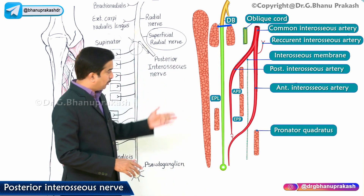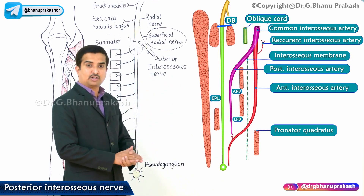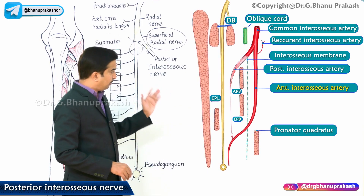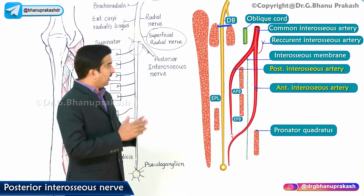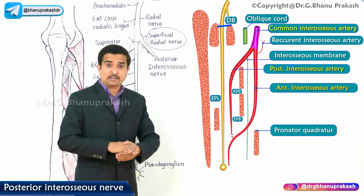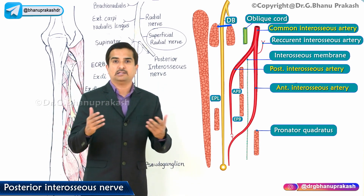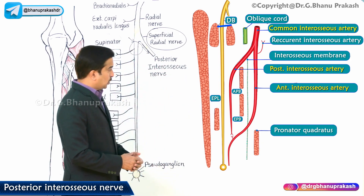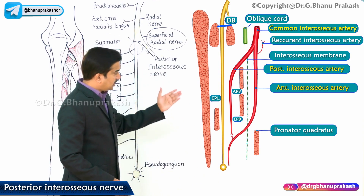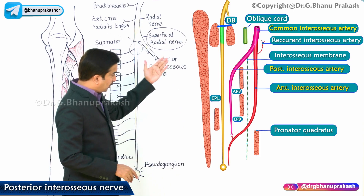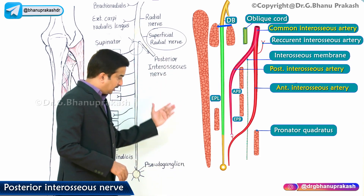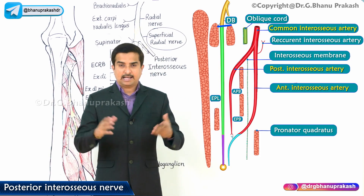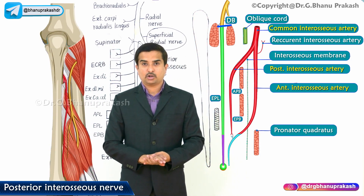If you see the posterior interosseous nerve in relation to arteries, as visible in this picture, in the majority of its course the posterior interosseous nerve is related to the posterior interosseous artery. We have two arteries — the anterior interosseous artery and the posterior interosseous artery — both arising from the common interosseous artery, which in turn arises from the ulnar artery. In the proximal two-thirds of the forearm, the nerve is related to the posterior interosseous artery, but in the distal one-third it is related to the anterior interosseous artery.